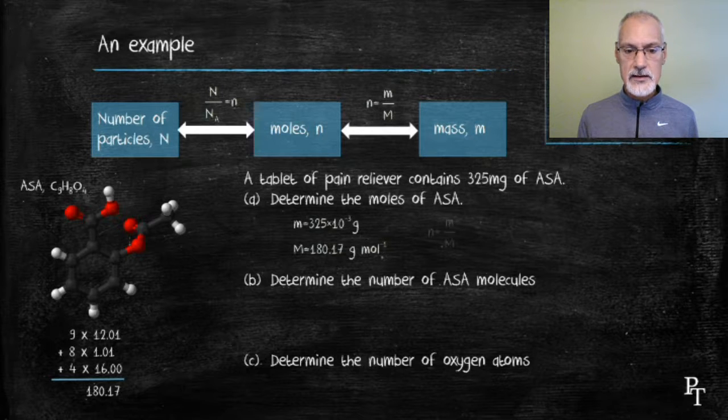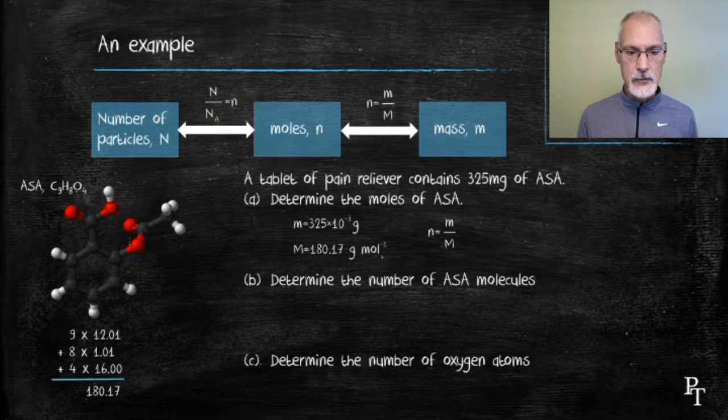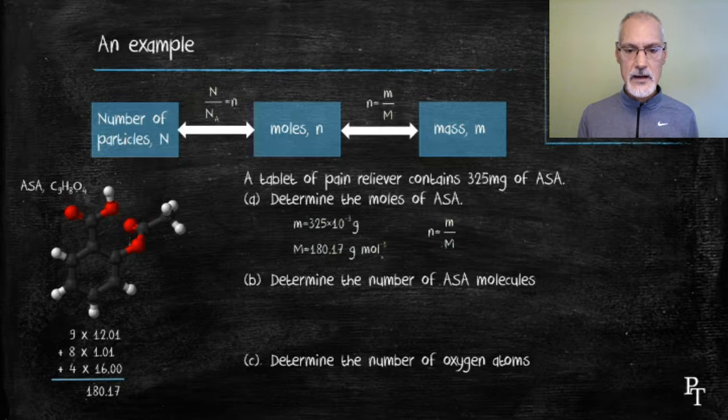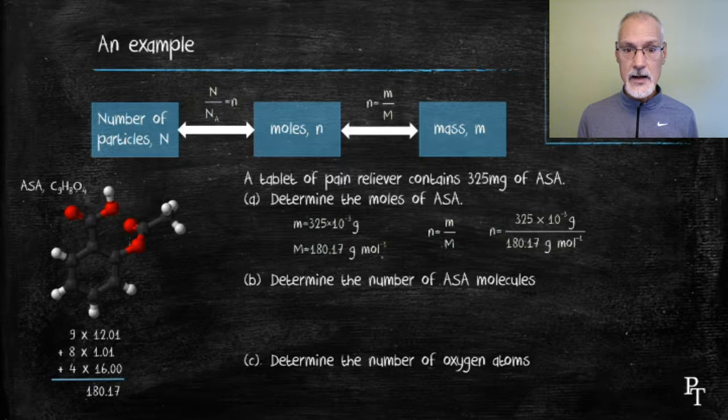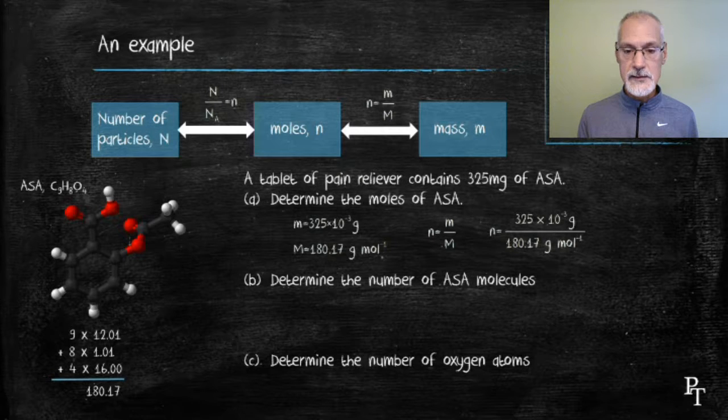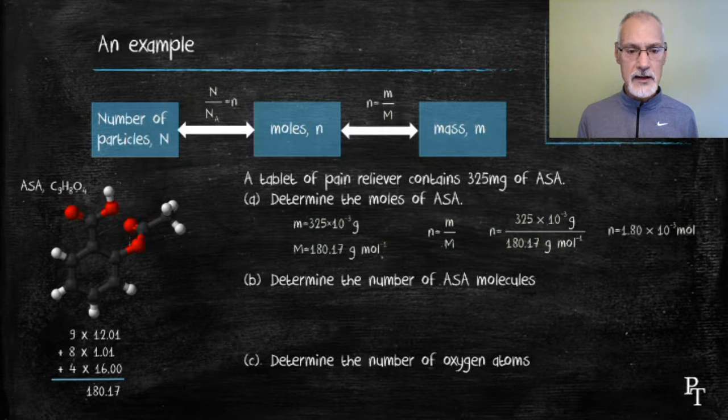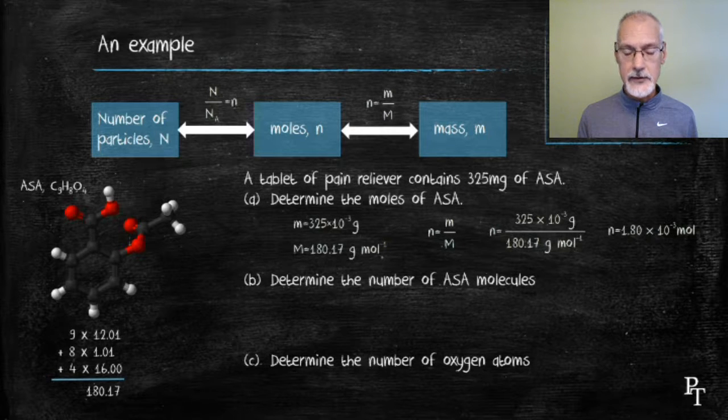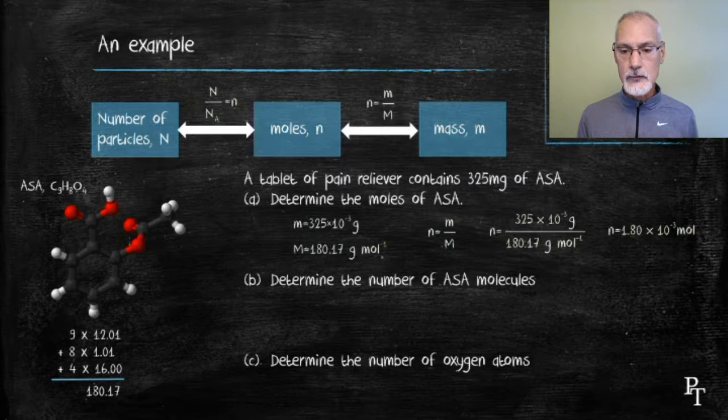The relationship I need takes the mass and divides it by the molar mass. So 325 times 10 to the minus 3, divided by my 180, the grams will cancel out, leaving me with moles. And my final answer should have three significant digits, because the 325 has 3. So 1.80 times 10 to the minus 3 moles.